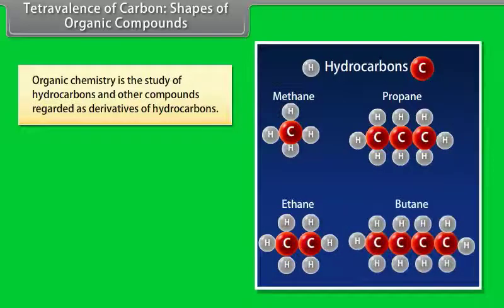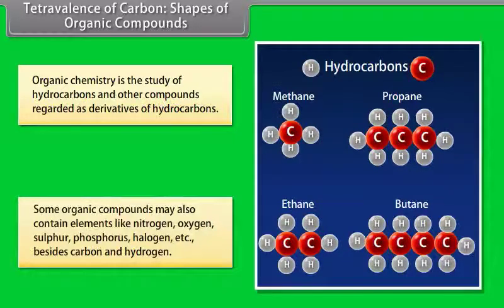Tetravalence of carbon and shapes of organic compounds. Organic chemistry is the study of hydrocarbons and other compounds regarded as derivatives of hydrocarbons. Some organic compounds may also contain elements like nitrogen, oxygen, sulfur, phosphorus, halogen, etc., besides carbon and hydrogen.